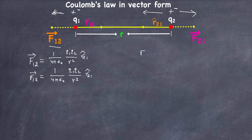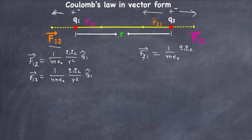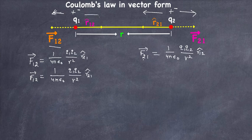Similarly, we're going to write the equation for the force on charge q2 due to charge q1. So F21 — the force on charge q2 due to charge q1 — is equal to 1 over 4 pi epsilon naught times q1 q2 over r squared, times r̂12. Because the force due to charge q1 is in the direction from q1 towards q2, so the direction is r̂12.